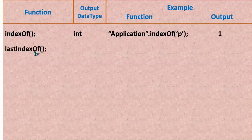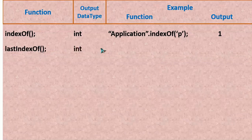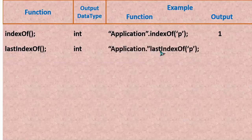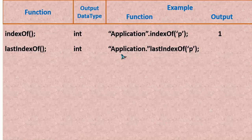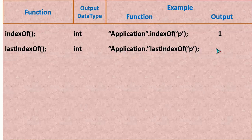Next we have lastIndexOf(). Here again the output is of integer data type. For the same example, "application".lastIndexOf('p') takes the last occurrence of p. That is 0, 1, 2 — so 2 is going to be the output.